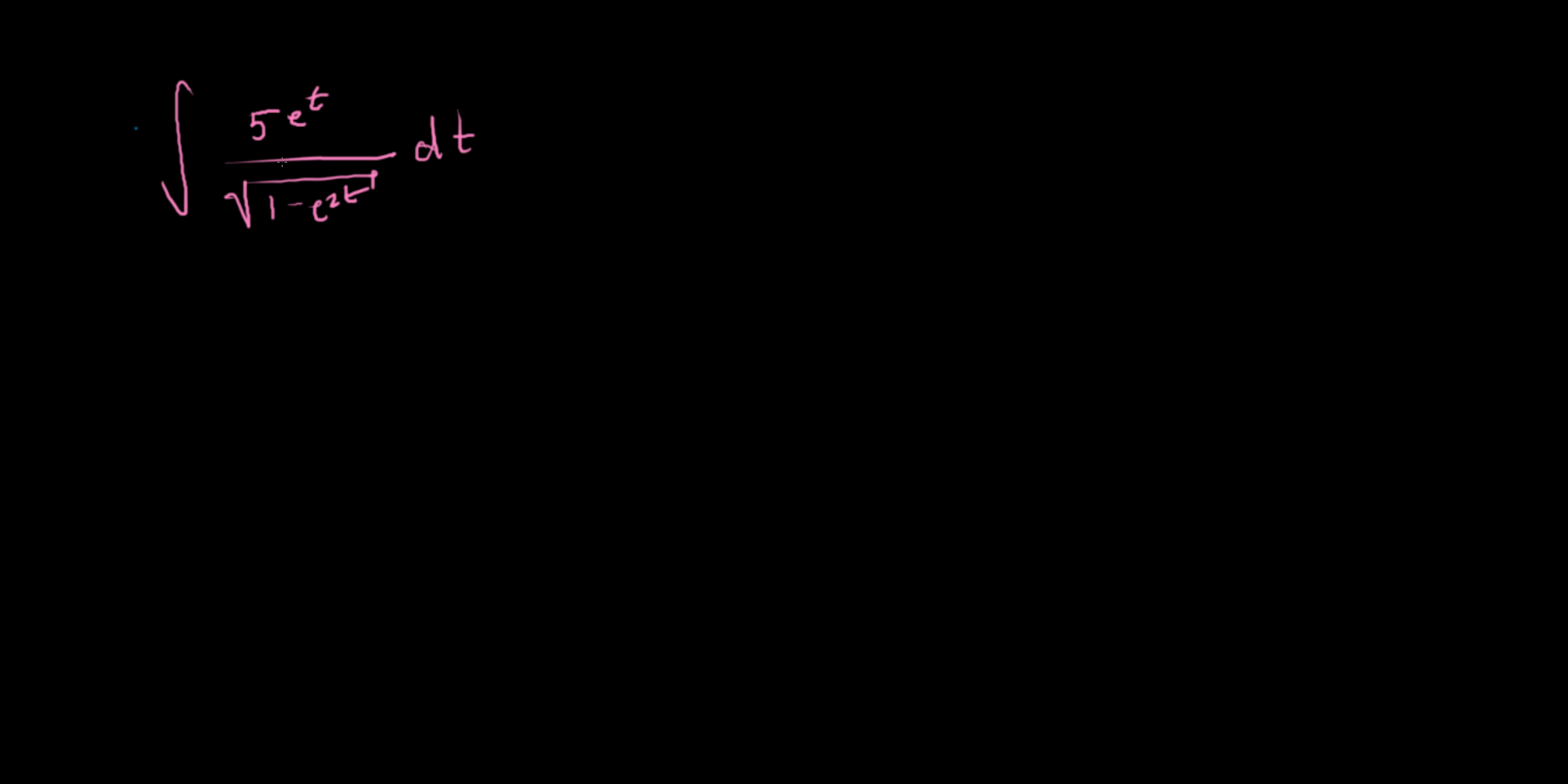Okay, we have this integral here: 5e^t over the square root of 1 minus e^(2t). And this is actually a very deceptively simple u-substitution problem, and it's so deceptive it threw me for quite a loop.